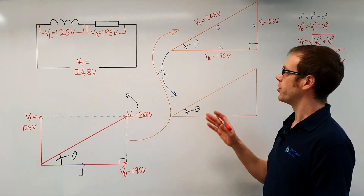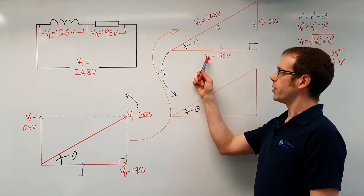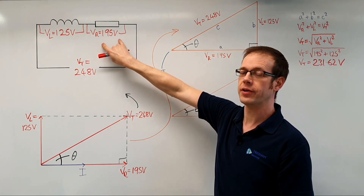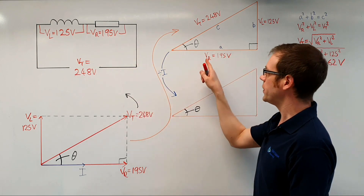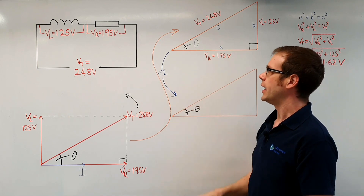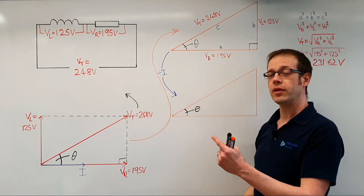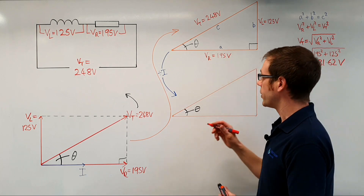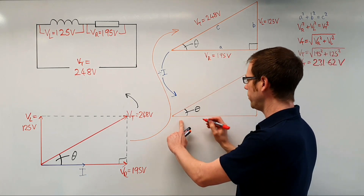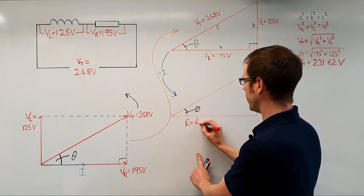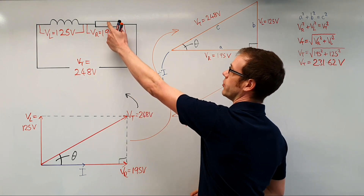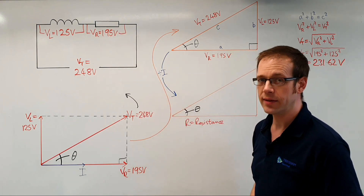Turning our attention back to this triangle, we have VR — the voltage measured across the resistive part of our fluorescent light circuit. If we take that voltage and divide it by the current flowing through the load, it tells us the value of resistance that part of the load has. So V divided by I for this side of the triangle gives us the resistance of the resistive part of the circuit.